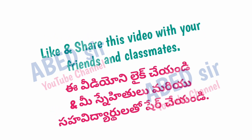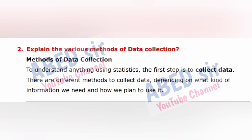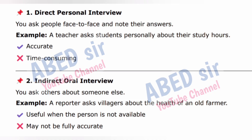Next important long question: Explain the various methods of data collection. To understand anything using statistics, the first step is to collect data. There are different methods depending on what kind of information we need. Method 1: Direct personal interview — you ask people face-to-face and note their answers. Example: A teacher asks students personally about their study hours. Accurate but time-consuming. Method 2: Indirect oral interview — you ask others about someone else. Example: A reporter asks villagers about the health of an old farmer. Useful when the person is not available, but may not be fully accurate.